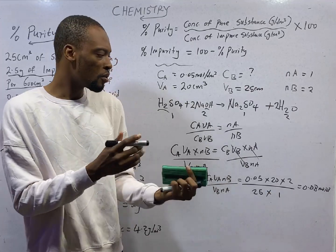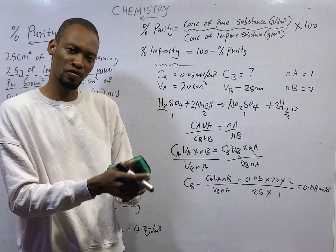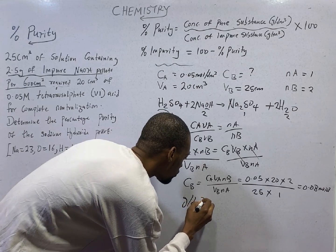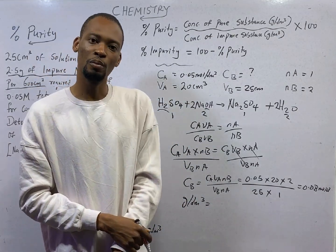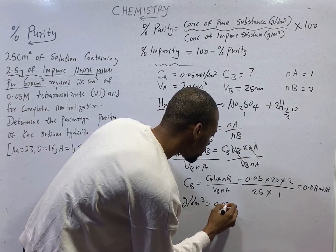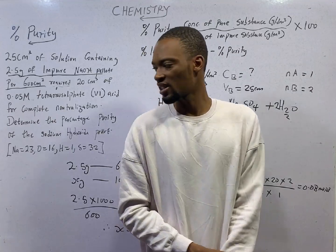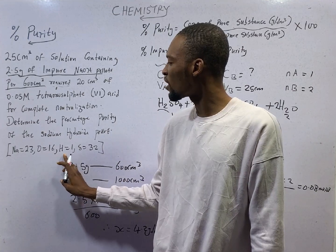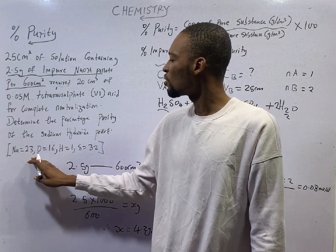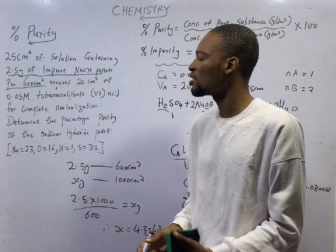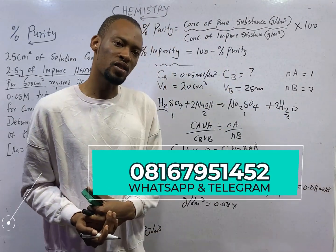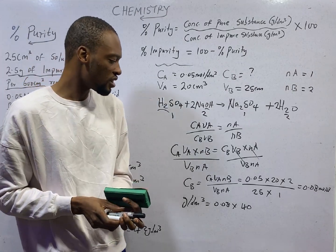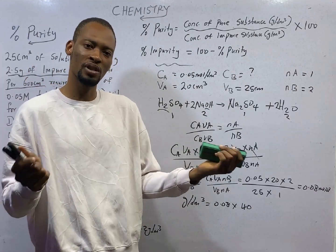How do you do that? Moles per dm³ is grams per dm³ over molar mass. That is 0.08 times molar mass of sodium hydroxide. Sodium is 23, oxygen is 16, and hydrogen is 1. So Na 23, O 16 plus H 1, that is 40. Sodium hydroxide is 40 as molar mass. So times 40, that will give you the concentration of the base in grams per dm³. This will give you around 3.2 grams per dm³.